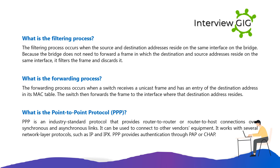What is the filtering process? The filtering process occurs when the source and destination addresses reside on the same interface on the bridge. Because the bridge does not need to forward a frame where the destination and source addresses are on the same interface, it filters the frame and discards it.